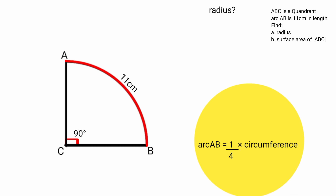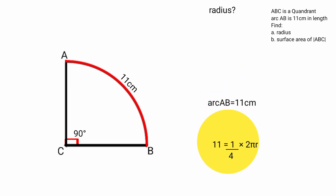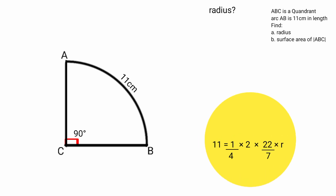Arc AB equals 1 over 4 times the circumference of the circle. The formula for the circumference of a circle is 2πR, so arc AB equals 1 over 4 times 2πR. The length of arc AB is 11 centimeters, so if we equate now: 11 equals 1 over 4 times 2πR. Using π as 22 over 7, we get 11 equals 1 over 4 times 22 over 7 times R.